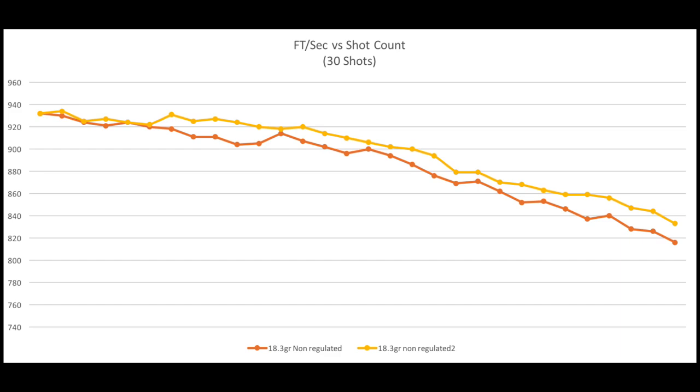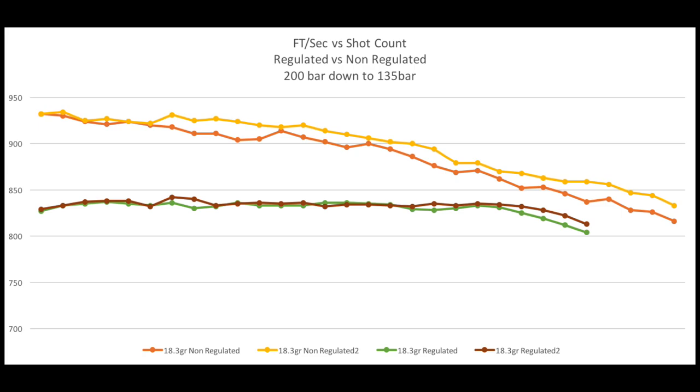With the regulator, the first 20 shots at least I might get slightly less power, but it's constant, constant, constant velocity, ensuring that my point of impact is the same. And I would much rather have a 30-foot-pound PCP putting bullets in the same hole than having a 35-foot-pound PCP with a constant drop in point of impact for the first 20 rounds. And that's the biggest advantage that we get from the regulator: the constant velocity that equates to a very accurate PCP.